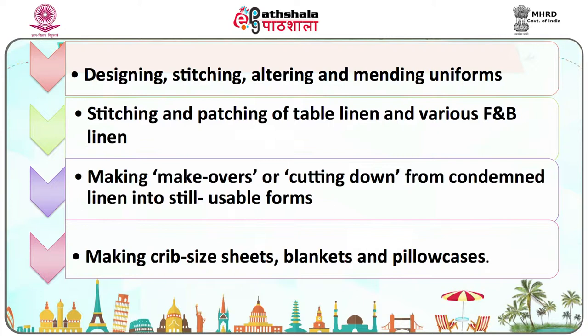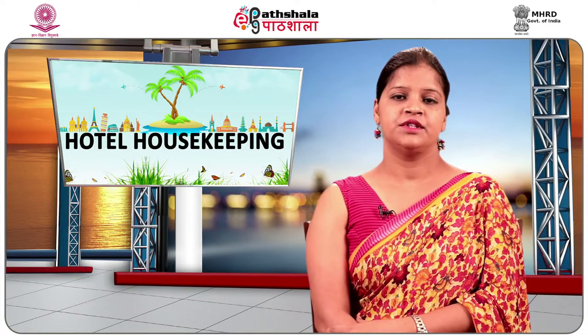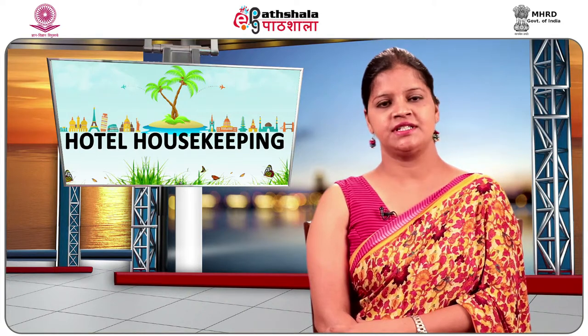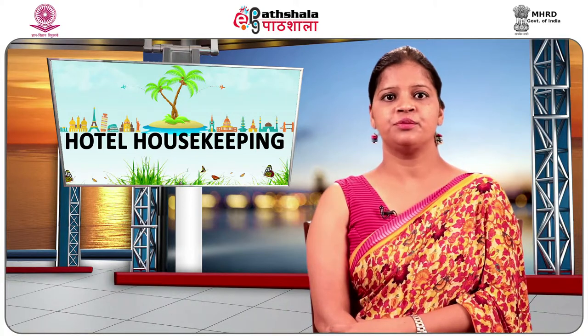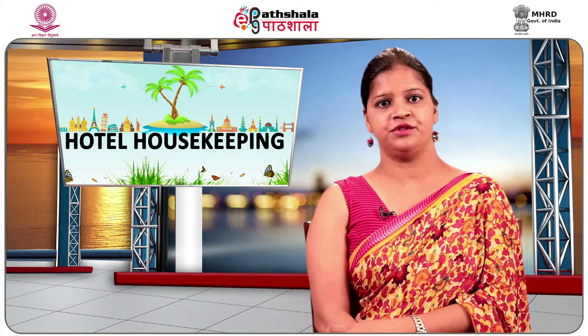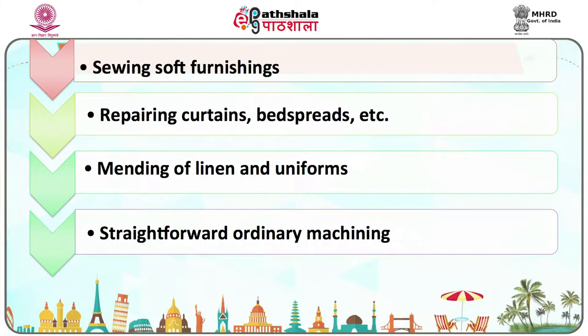Sewing soft furnishings such as draperies and bedspreads — special requisition is required for the same. Repairing curtains and bedsheets, particularly expensive items that require minimum repair to be of use. Mending of linen and uniforms — frayed parts and tears frequently occur in towels, tables and bed linen. These are repaired by machine darning, patching; repairing flaps of pillowcases and torn pockets are common sewing tasks.